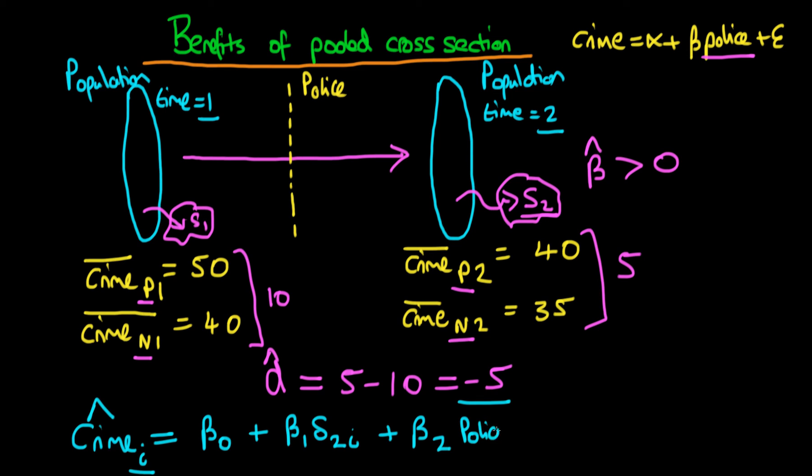And then what we do is we include our policing variable. So this policing variable is equal to 1 if at time period 1 that city went on to institute that policy and it's equal to 0 if they didn't. Whereas at time period 2, it's looking backwards. Did that particular city institute that policy or didn't they?